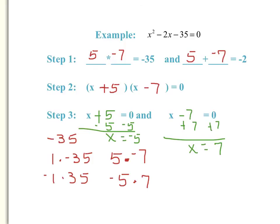Now let's check our work. I'm going to take negative 5 and plug it in for x in the original equation. We have negative 5 squared, which is 25. And negative 2 times negative 5 is positive 10. So basically I have 25 plus 10, which is 35, minus 35 equals 0. That's true, so x equals negative 5 is a good solution. Now let's check x equals 7. I have 7 squared, which is 49. And negative 2 times 7 is negative 14. So 49 minus 14 is 35, and 35 minus 35 is 0. So x equals 7 is a good solution.